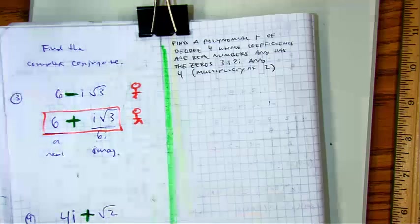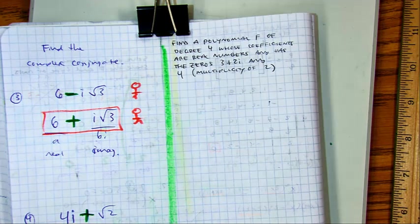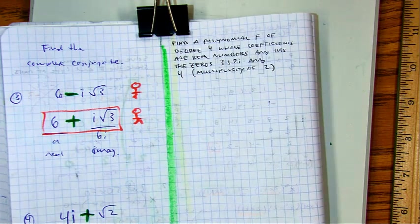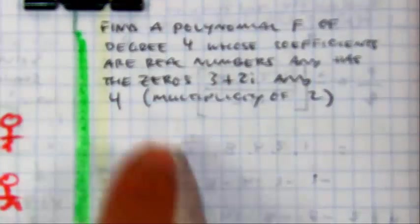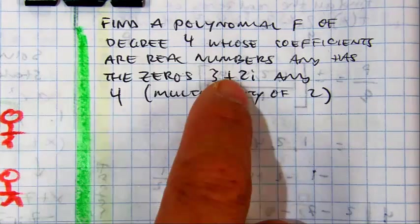Class, show me with your fingers the degree. Okay, so blank plus blank equals four, correct? How many do they give us? Count with me. Ready, set, go. One, two, three, four.